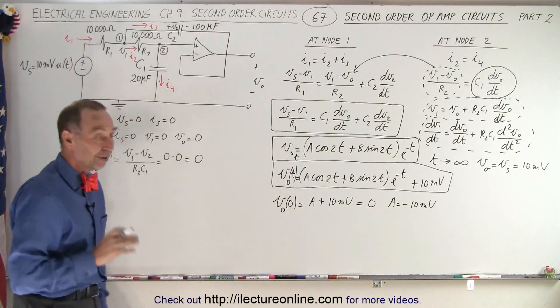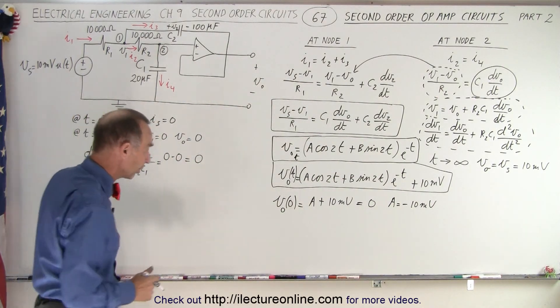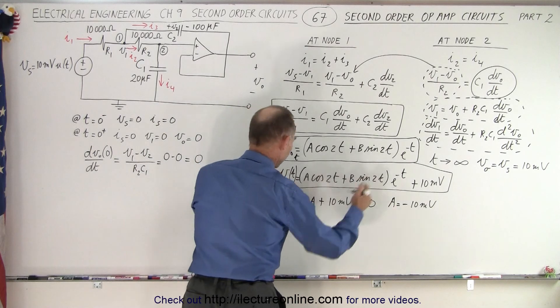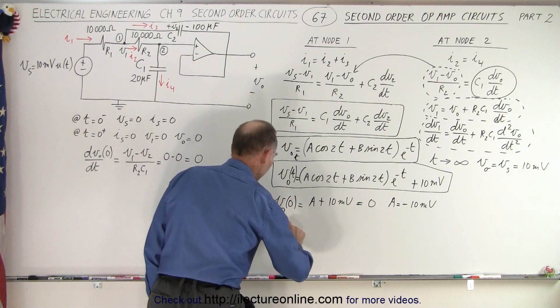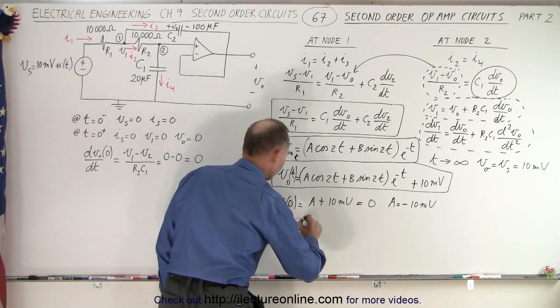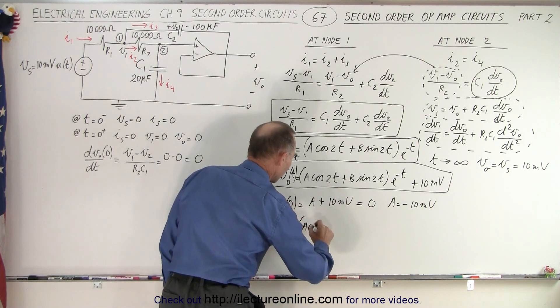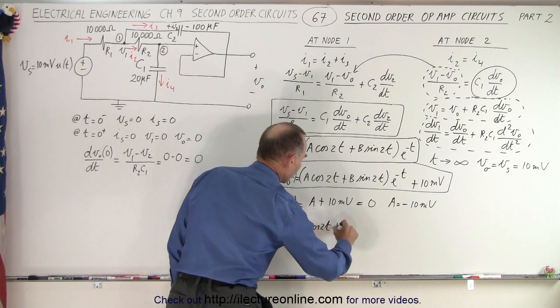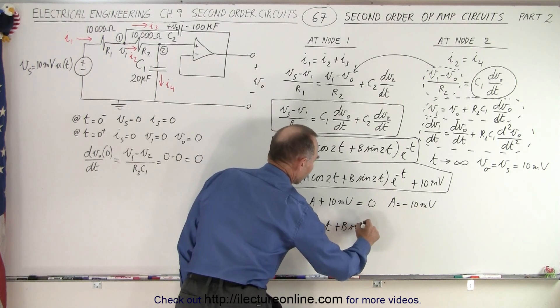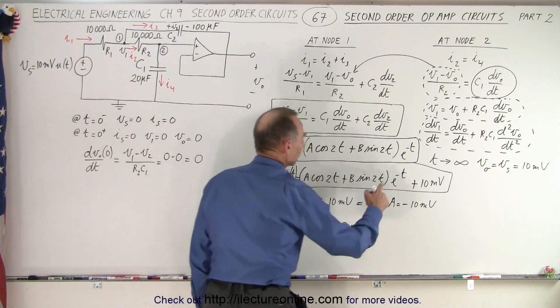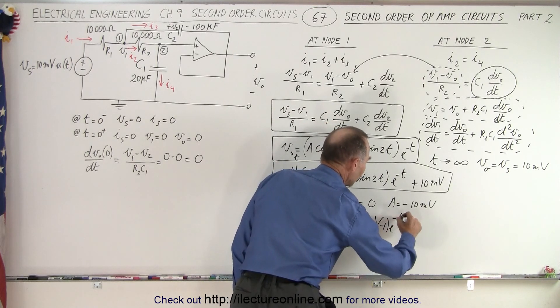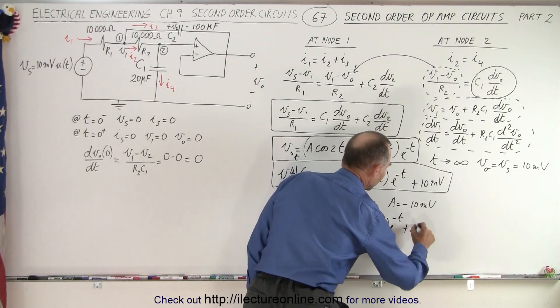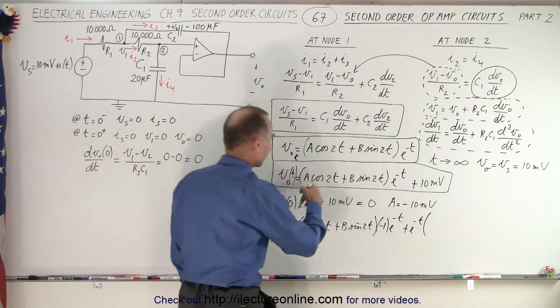Now when we take the derivative of that, which takes a little bit of work, so we can say that dV dt of the output voltage is equal to the first, which is A times the cosine of 2t, plus B times the sine of 2t, times the derivative of the second, which is minus 1 times e to the minus t, plus the second, e to the minus t, times the derivative of the first.